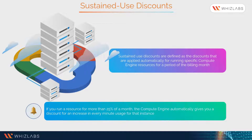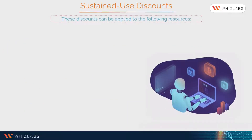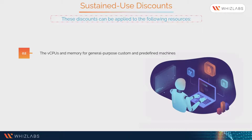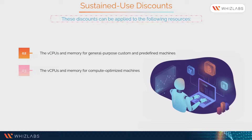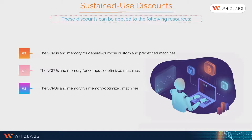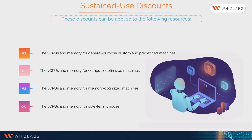Sustained use discounts can be applied to the following resources: all GPU devices; vCPUs and memory for general-purpose, custom, and predefined machines; vCPUs and memory for compute-optimized machines; vCPUs and memory for memory-optimized machines; and vCPUs and memory for sole-tenant nodes.